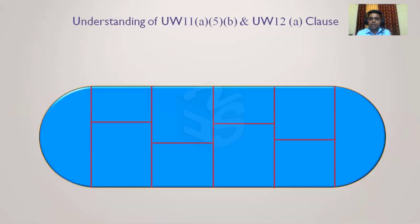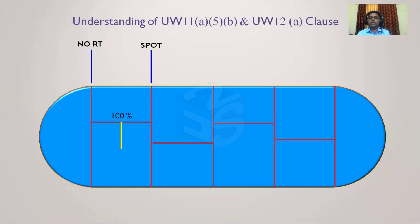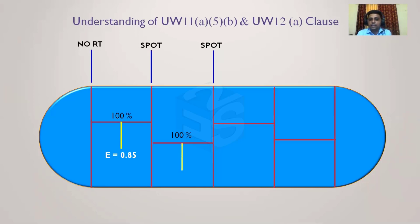Let's understand this with examples. Example 1: The head-to-shell junctions have no RT done on either side, and the L-seam is 100% radiographed. Since the L-seam is 100% radiographed but both sides don't satisfy the radiography requirement, UW-11a5b is not satisfied and we cannot take E=1; joint efficiency must be reduced to 0.85. Example 2: The L-seam is 100% radiographed and the category B joints on both sides are also spot radiographed, satisfying UW-11a5b, so joint efficiency E=1.